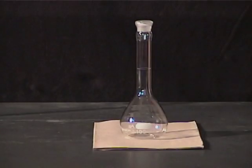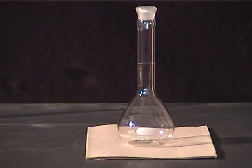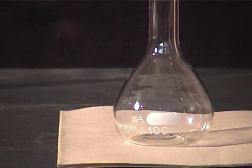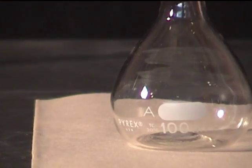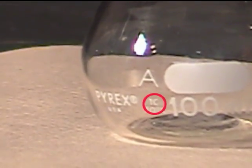A volumetric flask, on the other hand, is calibrated to contain a specific volume of liquid at a given temperature. If you inspect the label printed on a volumetric flask, you will see the designation TC, meaning to contain.